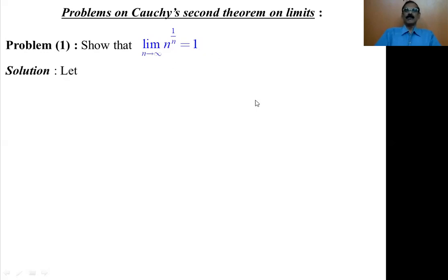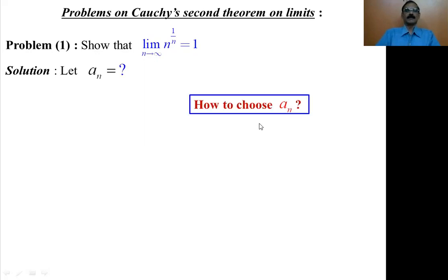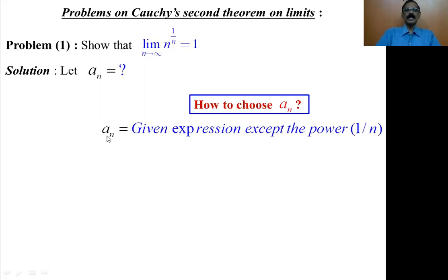First of all, we have to write a_n, the nth term of the given sequence. Whether it is Cauchy's first theorem on limits or Cauchy's second theorem on limits, the very first step is to write a_n. Now, a_n is the given expression except the power 1 by n.